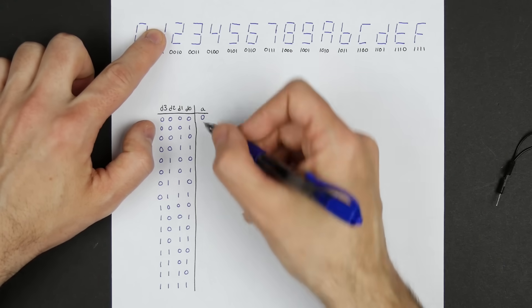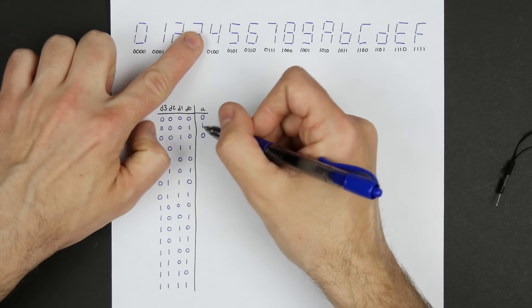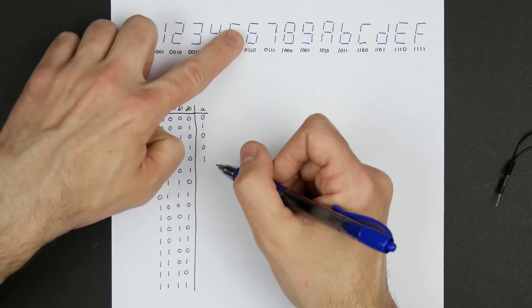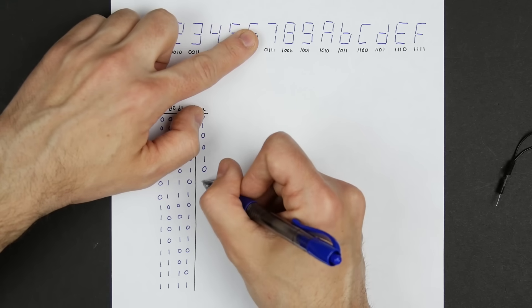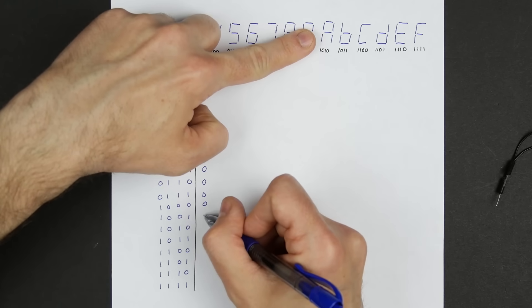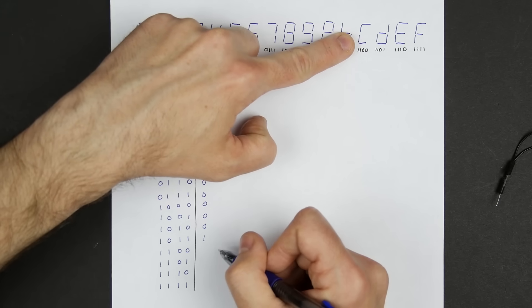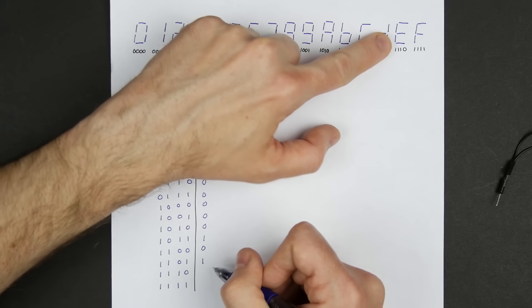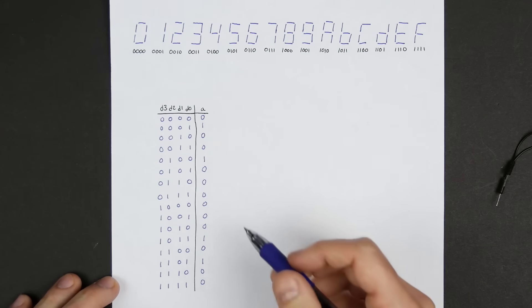For one, it's off. So that's a one. For two, it's on. So that's a zero. For three, it's on. So that's a zero. For four, it's off. For five, it's on. For six, it's on. For seven, it's on. For eight, it's on. For nine, it's on. For A, it's on. For B, it's off. So that's a one. For C, it's on. For D it's off and then for E and F it's on.